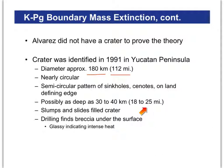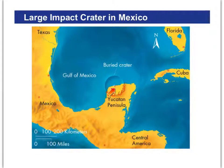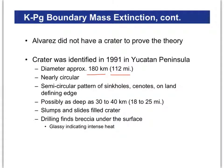Over time the crater got filled in with landslides and slumps, and then other sediments were deposited on it. But as we drill down into the crater, we do find breccia — a good indicator that something slammed into the Earth, because instead of weathered particles, we've got very jagged particles cemented together. That suggests intense heat, probably because of this object striking the Earth.